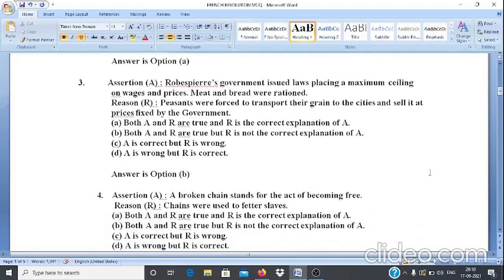Question 3. Assertion A: Robespierre's government issued laws placing a maximum ceiling on wages and prices. Meat and bread were rationed. Reason R: Peasants were forced to transport their grain to the cities and sell it at prices fixed by the government.